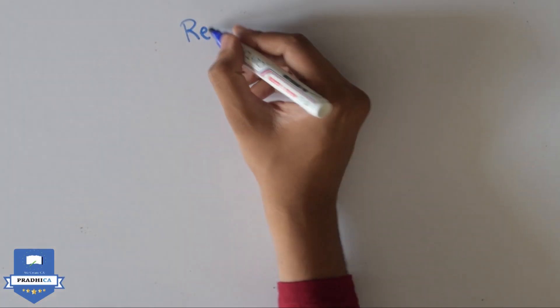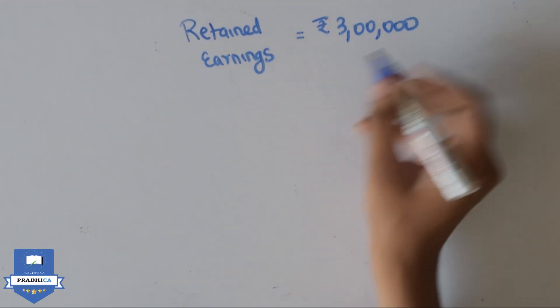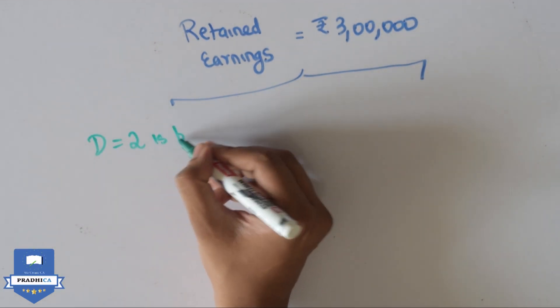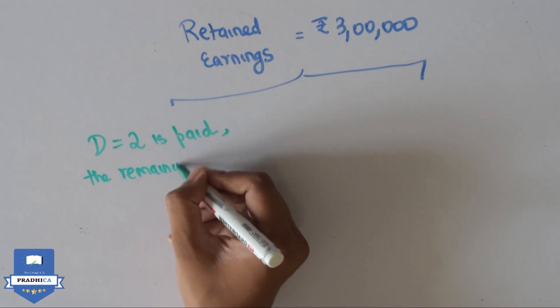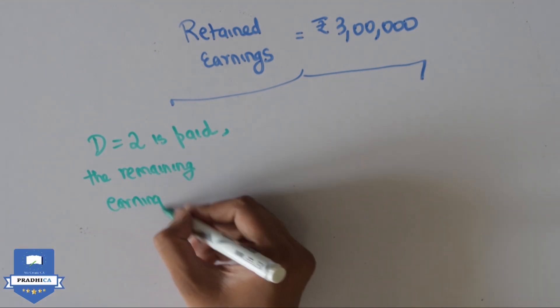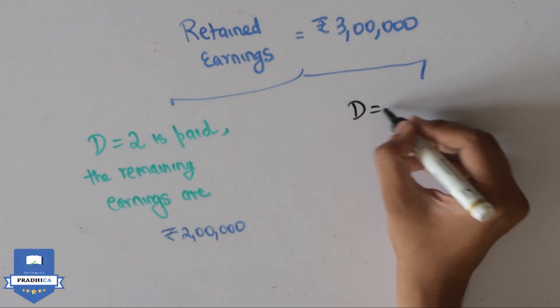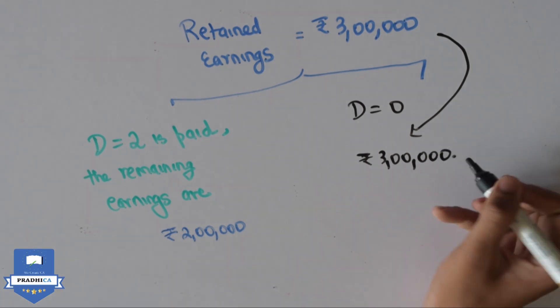Our company has retained earnings of Rs 3 lakhs. In the first case, since the dividend of Rs 2 is paid for 50,000 shares, the remaining retained earnings available for reinvestment are only Rs 2 lakhs. In the second case, since no dividend is paid, the entire Rs 3 lakhs is available for reinvestment.